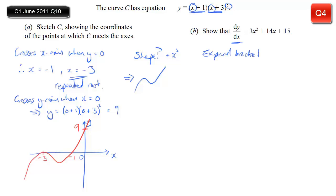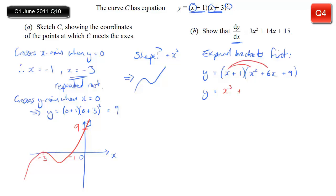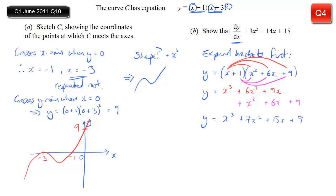For part b, we want to find dy/dx, so we need to expand the brackets first. Expanding (x plus 3) squared gives x squared plus 6x plus 9. Then multiplying out (x plus 1)(x squared plus 6x plus 9) carefully: x times x squared is x cubed, x times 6x is 6x squared, x times 9 is 9x, then 1 times x squared is x squared, 1 times 6x is 6x, and 1 times 9 is 9.